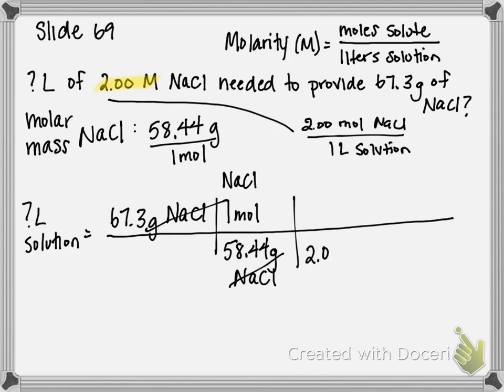On the bottom goes my 2 moles NaCl — that's from my molarity — and on top, 1 liter solution. So my moles of sodium chloride are going to cancel, and I'm left in liters of solution.